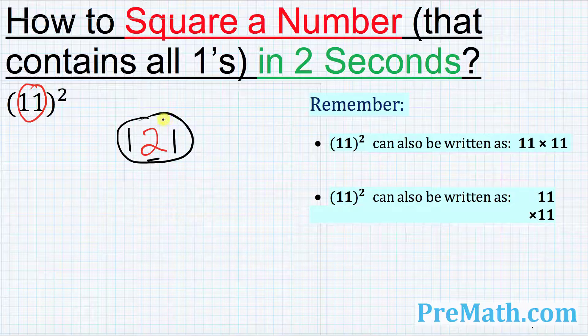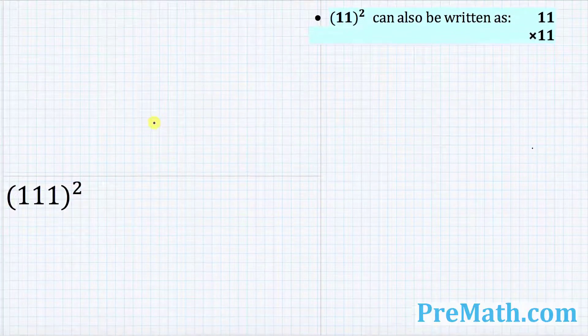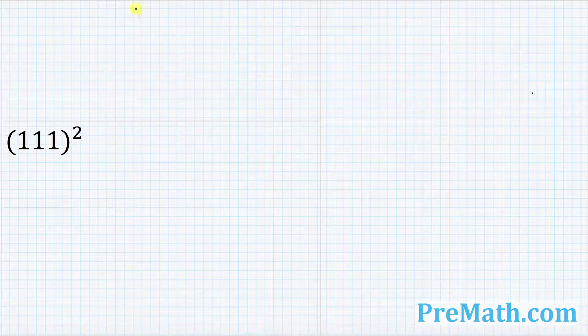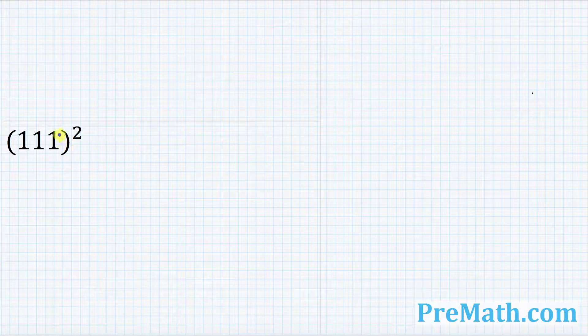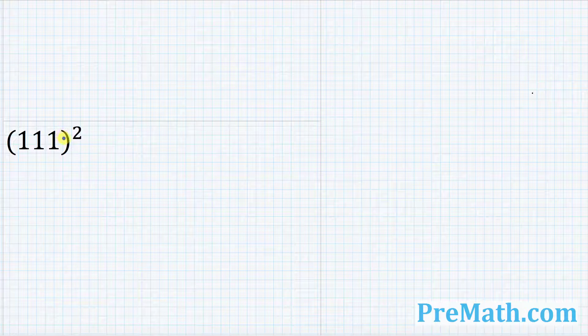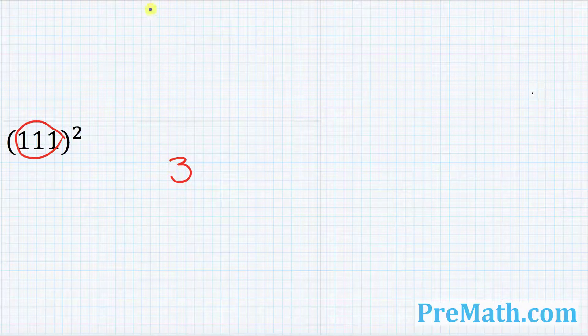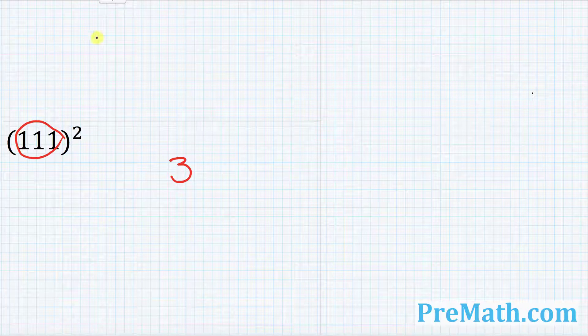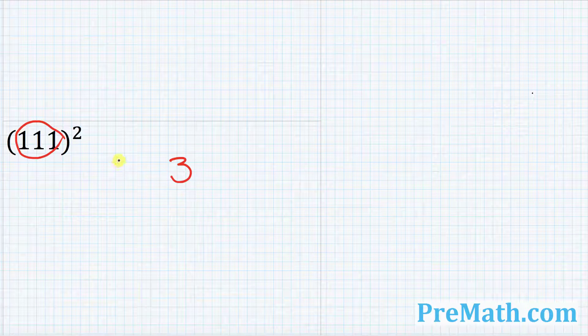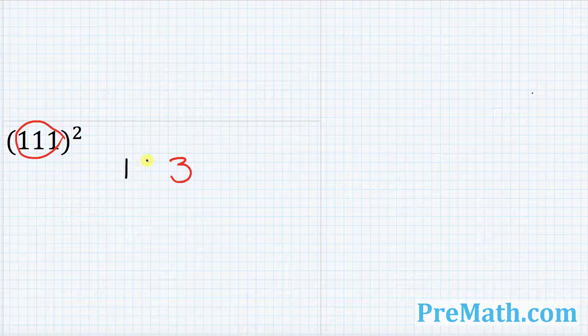Let's make it more clear by getting a few more examples. So look at this example right now over here. In this example how many digits we got? We got three ones, three digits. So I want you to write down three. So next thing is I want you to start counting from the left hand side. So it's gonna be one, two, three.